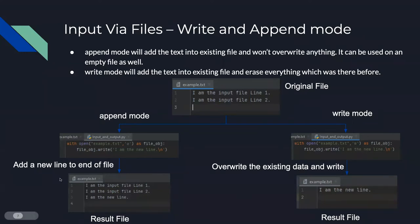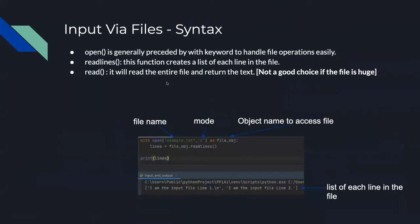Question: what's the difference between read and readlines? read() reads the entire file and returns it as one long string. readlines() reads the entire file but breaks it up into a list where each element is a line from the file. For that two-line example file, read() would return one string: 'I am the input file line one\nI am the input file line two'. readlines() would return a list with two elements. That's the key difference.